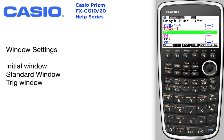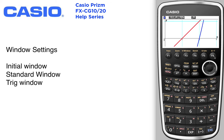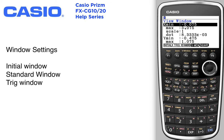From time to time you're going to get a graph that doesn't look like what you expected. That must mean that your window settings are off or aren't set according to what you want. In order to set your window, you'll see the view window right above the F3. So Shift F3 will get you the view window.